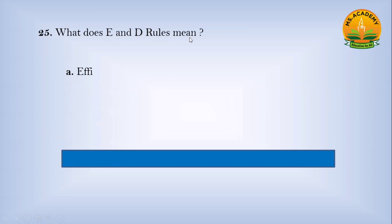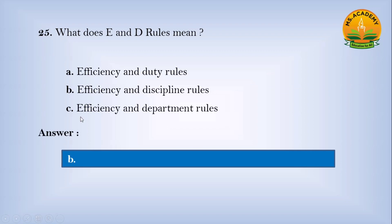What does E and D Rules mean? Option a) Efficiency and Duty Rules, Option b) Efficiency and Discipline Rules, Option c) Efficiency and Department Rules. Answer: b - Efficiency and Discipline Rules.